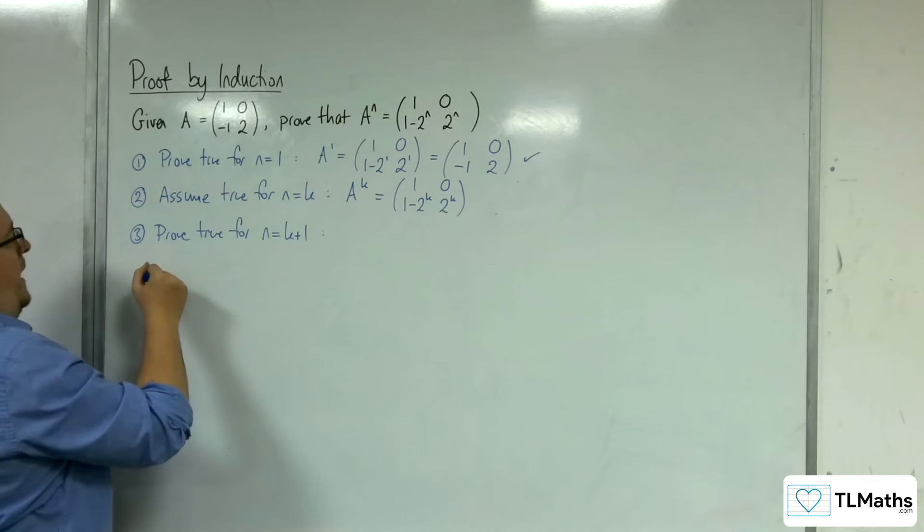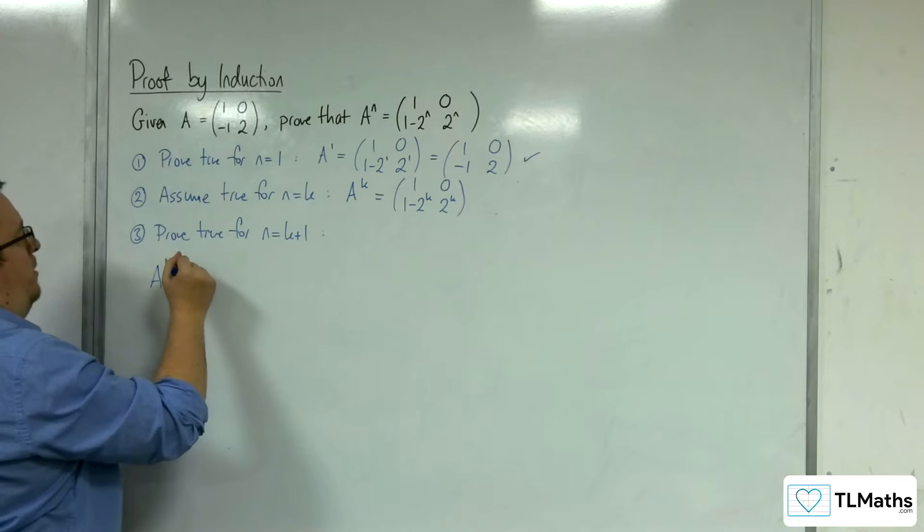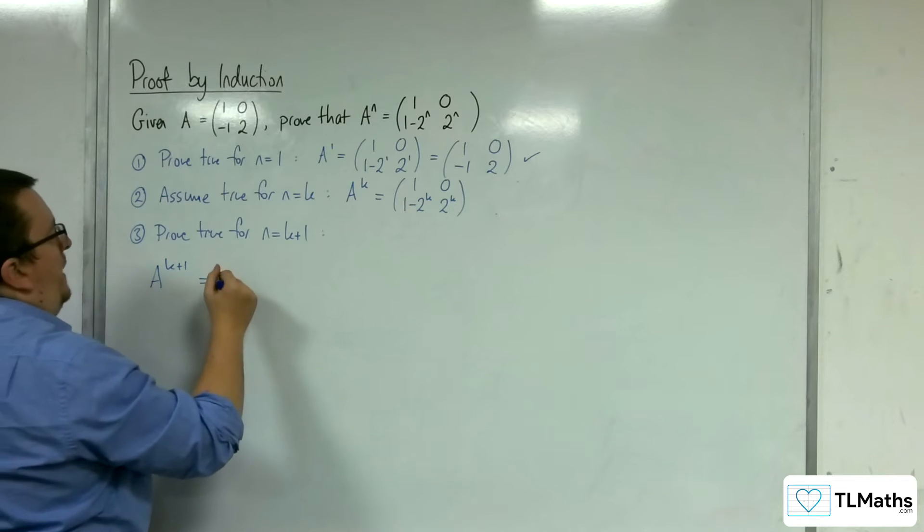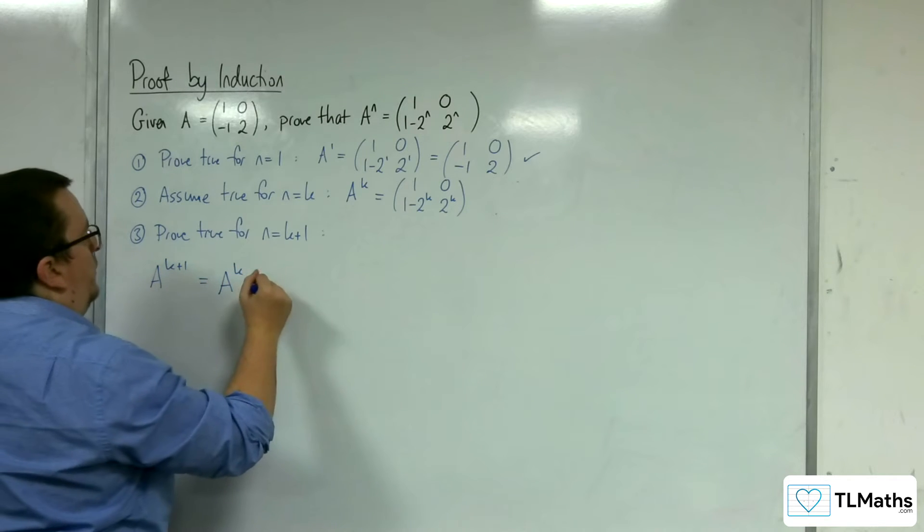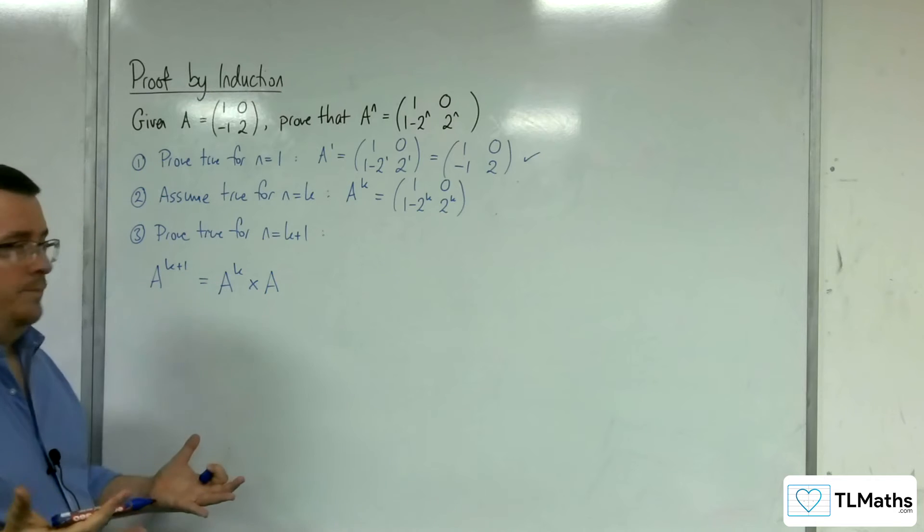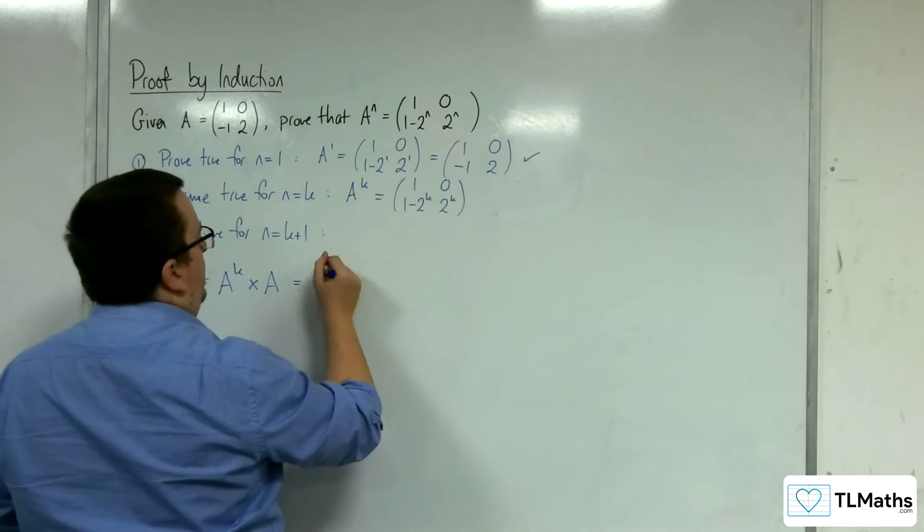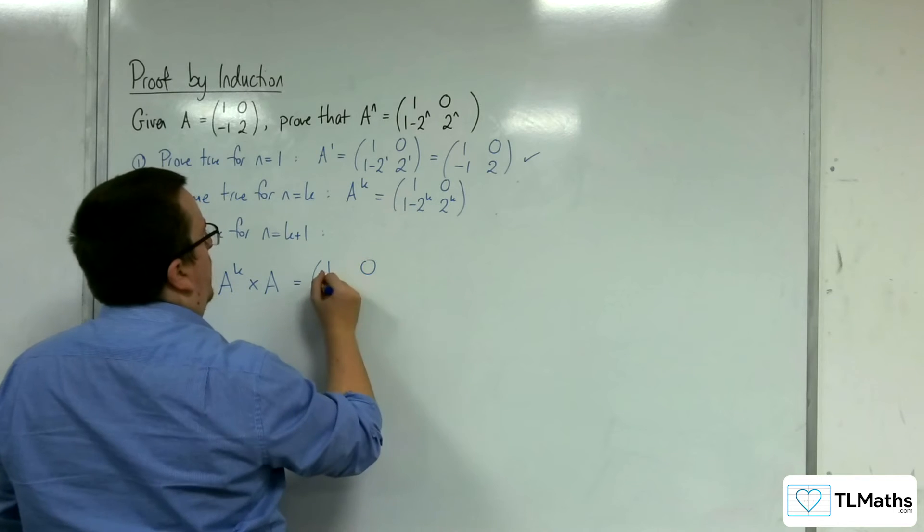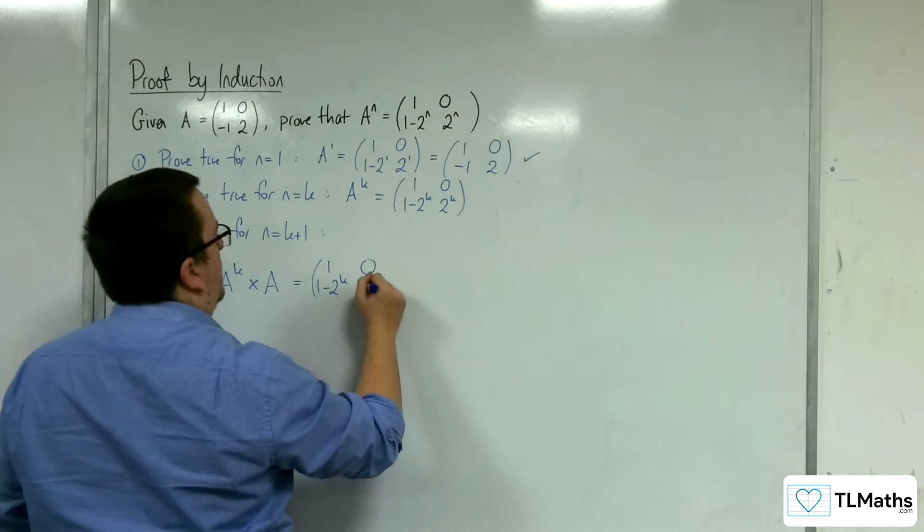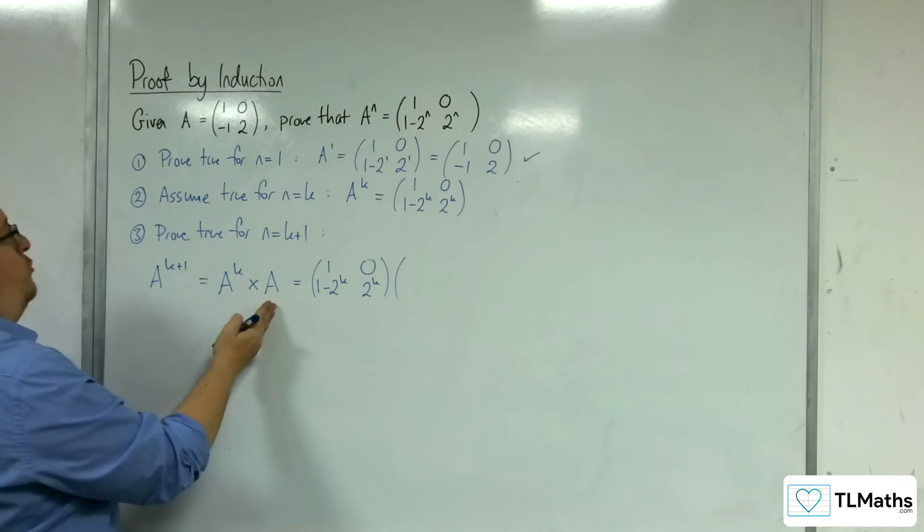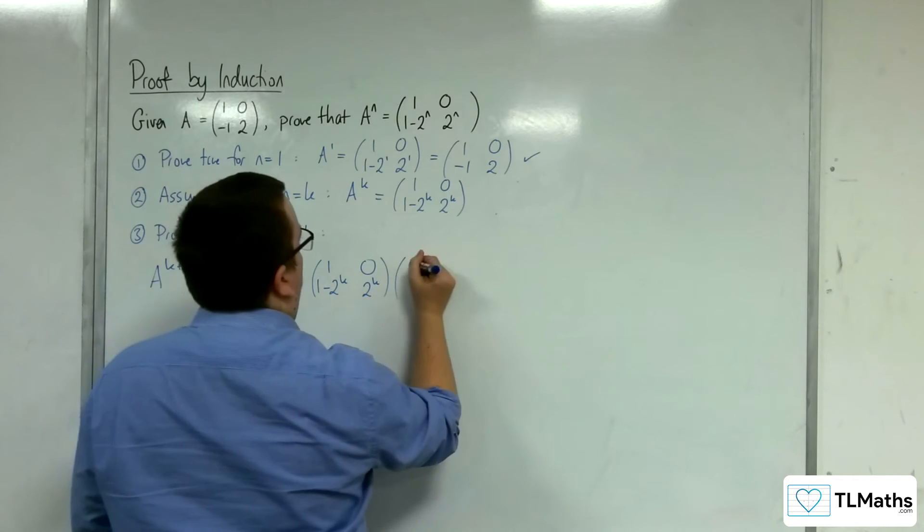A to the power of k plus 1 must equal A to the k times A to the 1. Now A to the k is (1, 0; 1 - 2^k, 2^k), and we're going to multiply that by the matrix A, which is (1, 0; -1, 2).